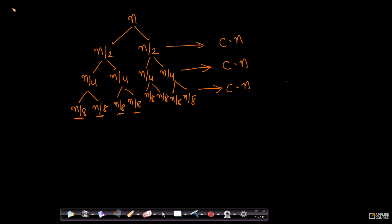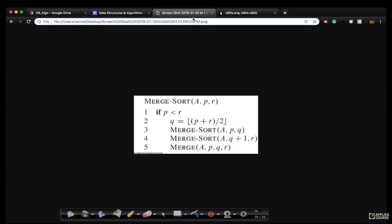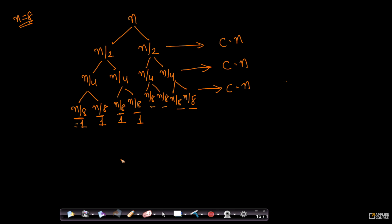Now comes the fun part. Let us assume n = 8. When n = 8, n/8 = 1, so we reach arrays of size 1 and cannot break further — there is nothing left to split. Now the total time complexity is 3·c·n, because we went 3 levels deep.